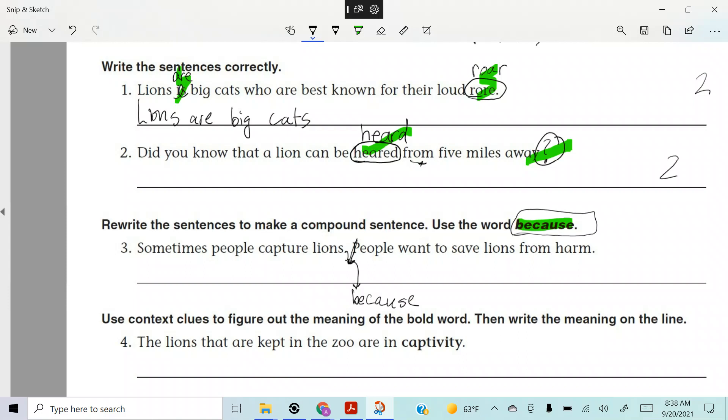Yes. All right. So sometimes people capture lions, comma, because people want to save lions from harm. Could you do that a different way, you think?